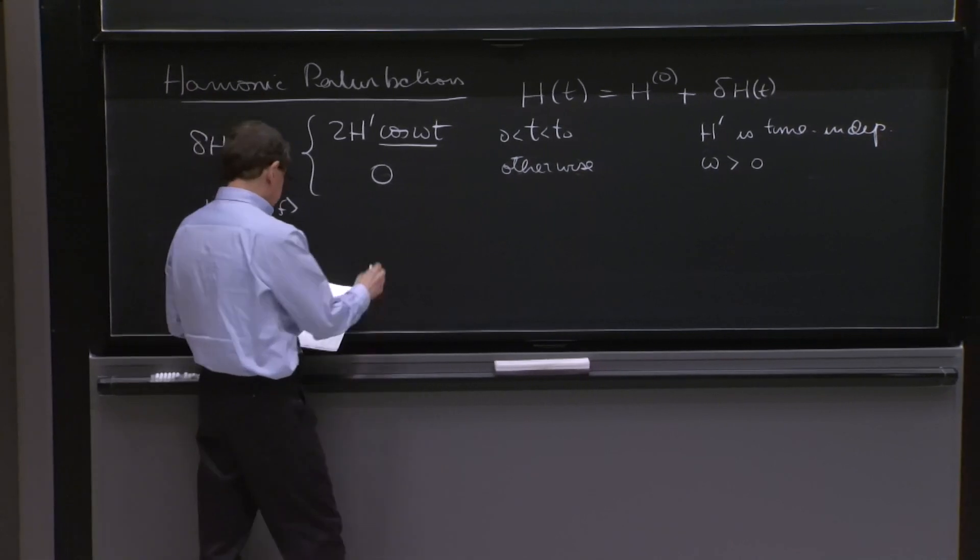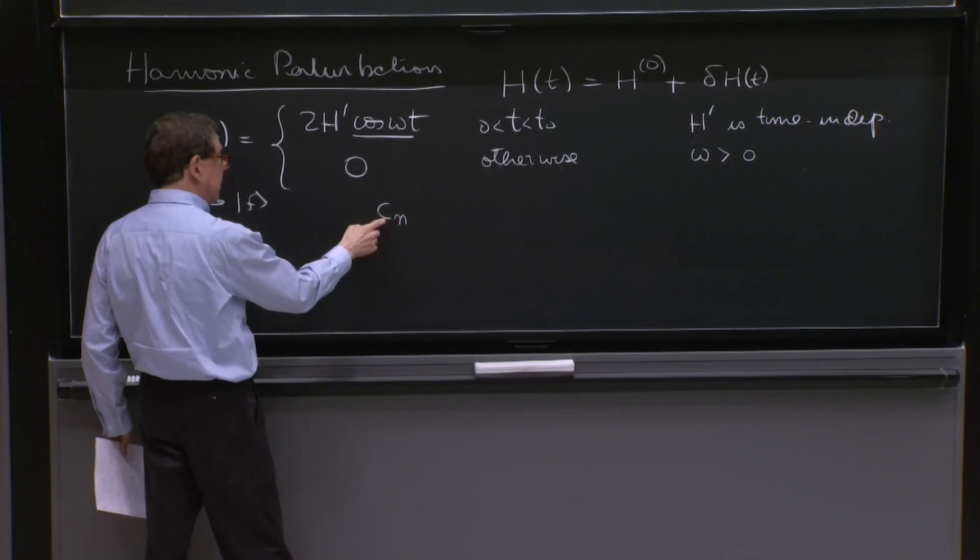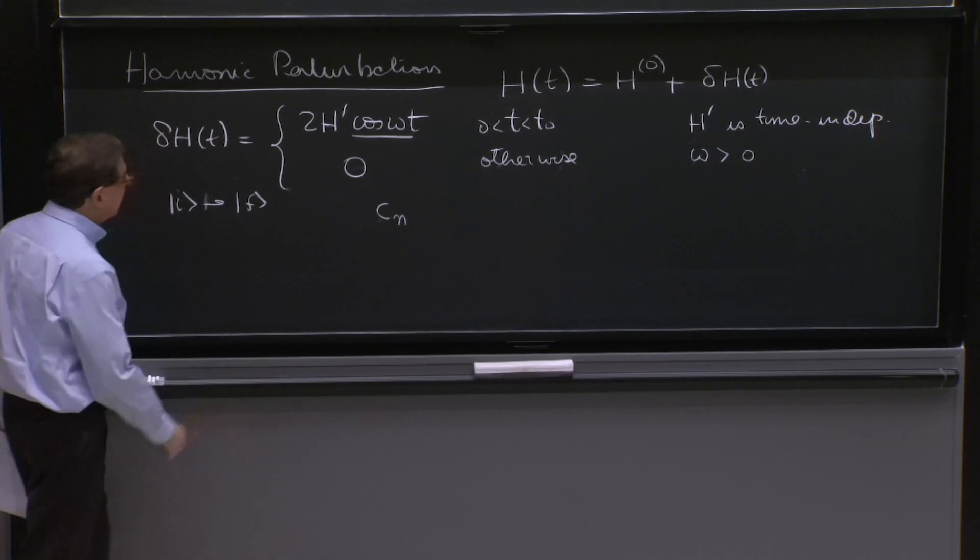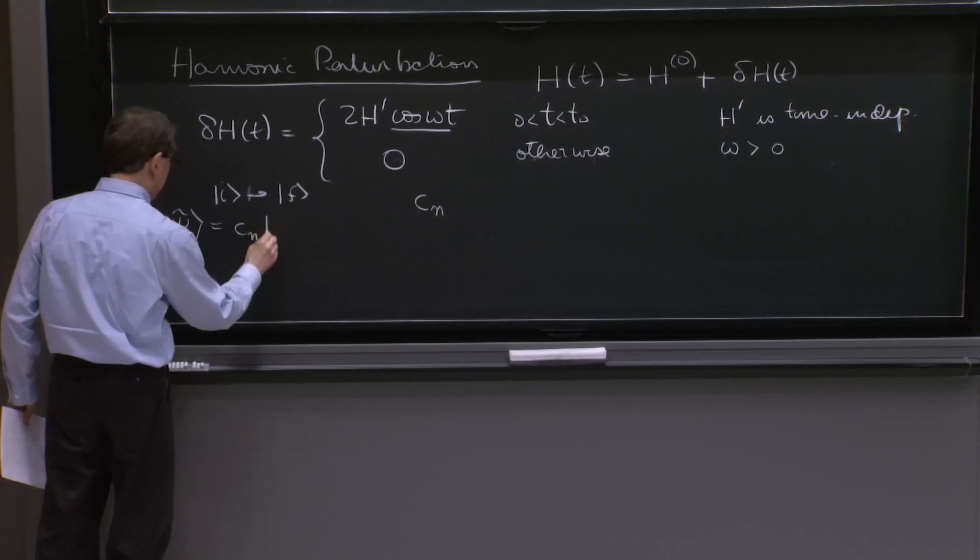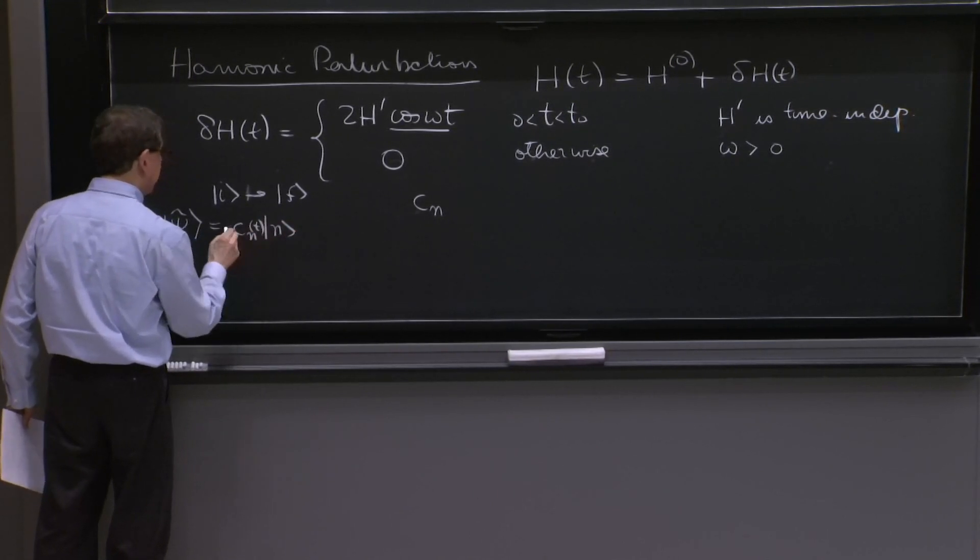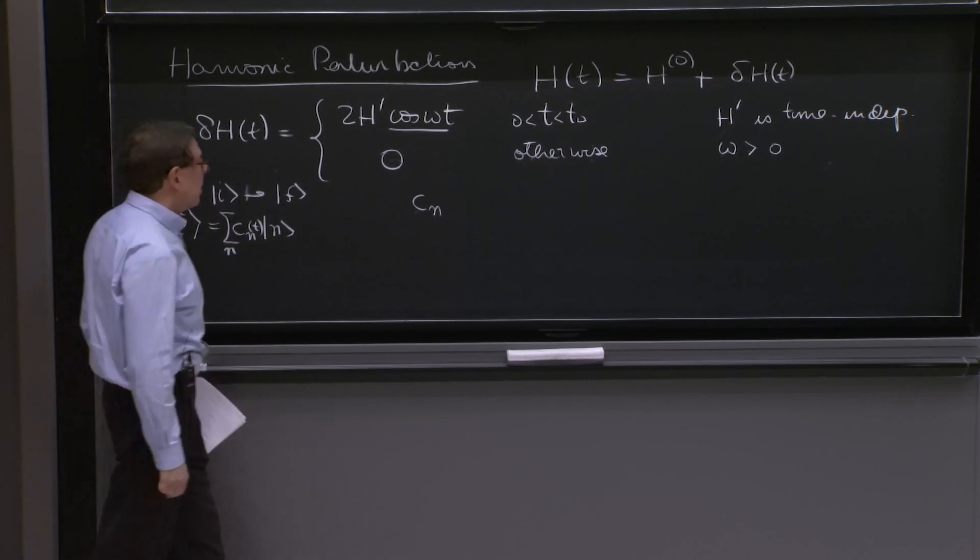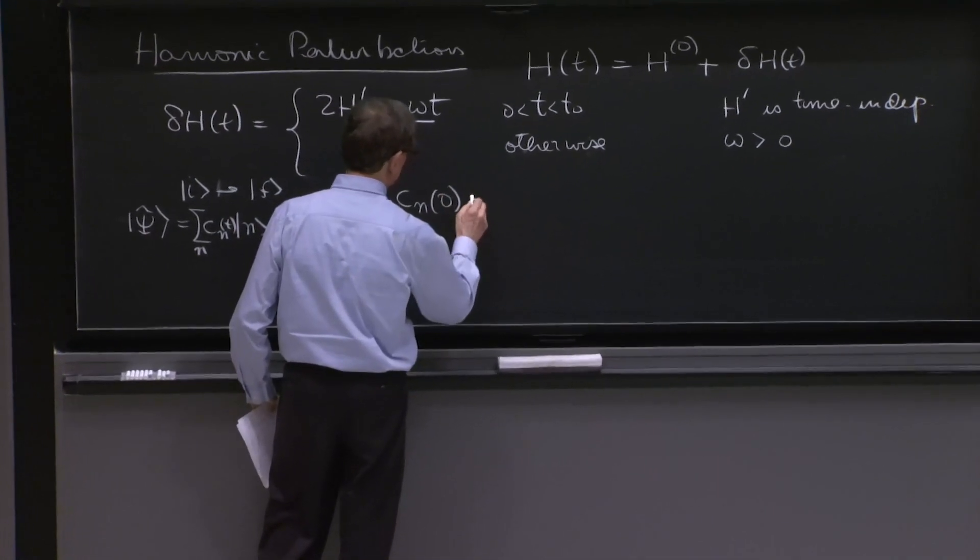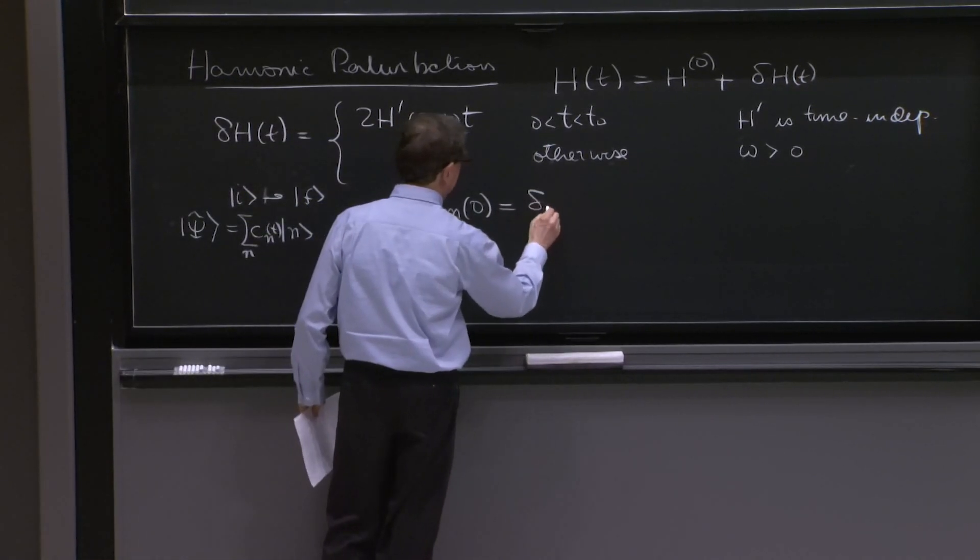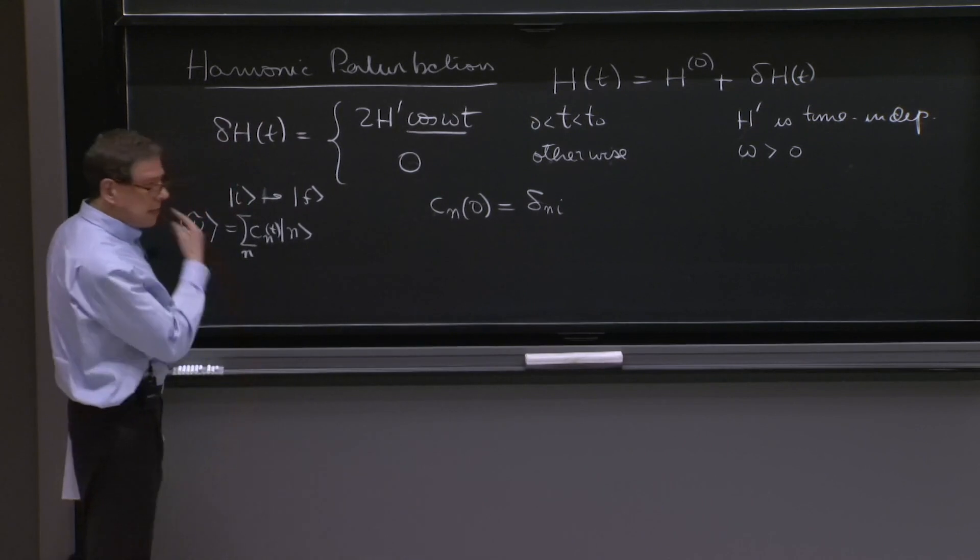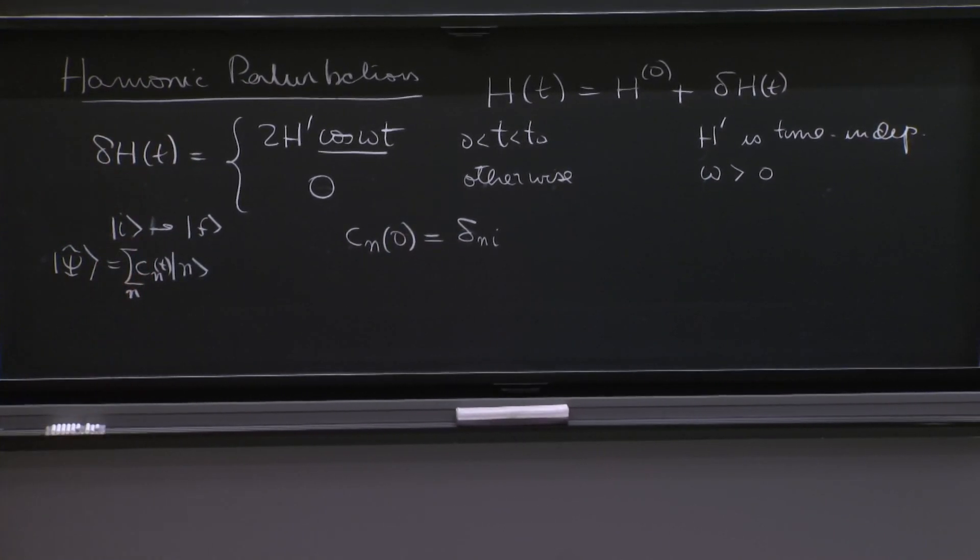And therefore, we will say that we will work in this language with these coefficients cn, these coefficients that multiply the states in psi tilde. Psi tilde is equal to cn of t sum over n. And this cn at time equals 0 will be equal to delta n i, which means that they are all 0 except when we're talking about c i at 0 is equal to 1, because we start with an initial state.